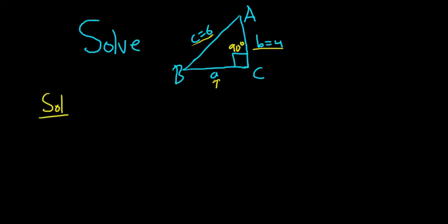To find the other side, to find little a, we can use the theorem of Pythagoras. It says that a squared plus b squared equals c squared. So we don't know a, so a squared is a squared. b is 4, so 4 squared is 16. And c is 6, so c squared is 36. So we can subtract the 16. So a squared is 36 minus 16. That's going to be 20.